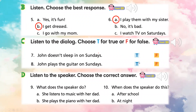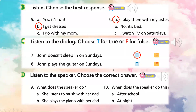All right. Number seven: John doesn't sleep in on Sunday — is it True or False? True. Exactly. Now number eight: John plays the guitar on Sunday — is it True or False? False. What does John do on Sunday? He plays soccer. John plays soccer on Sunday.